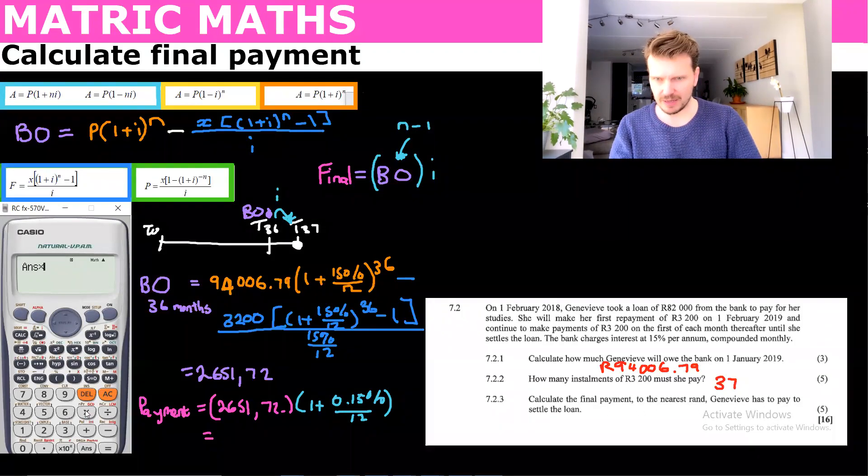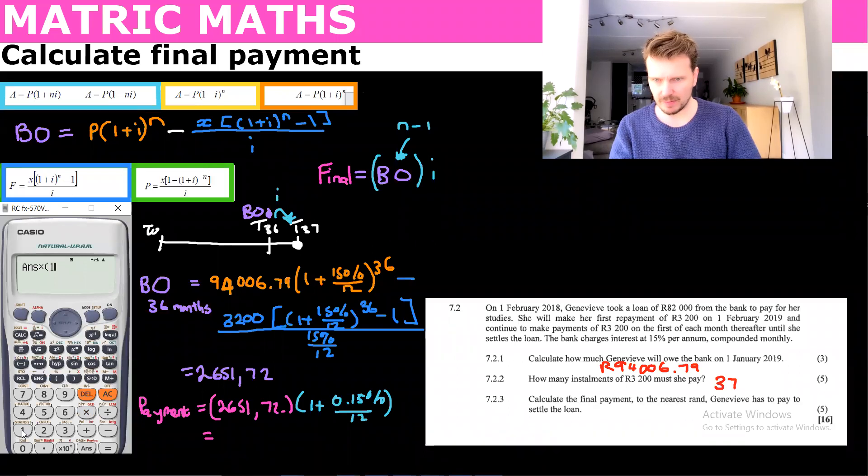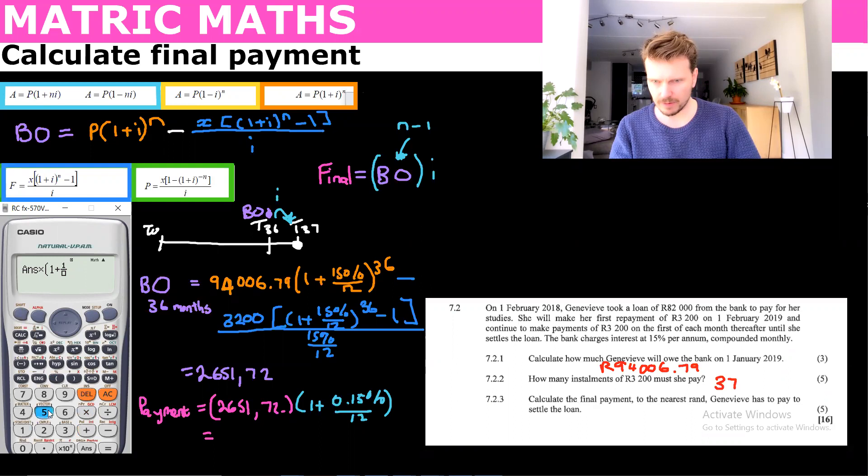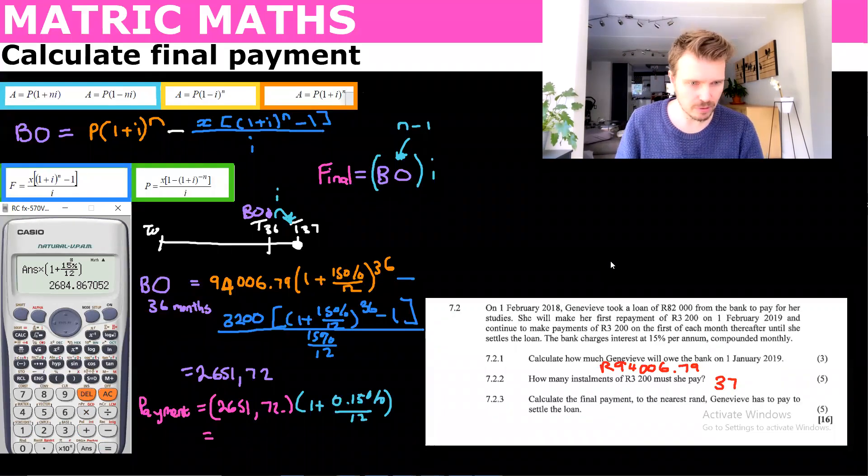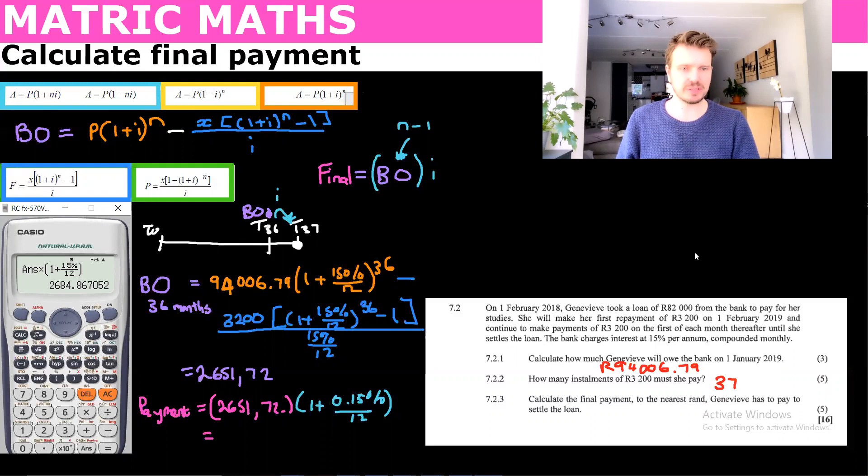We can just use the value that we've been doing there. So that would be then multiplied by one plus open brackets 15% over 12. And we get 268487.